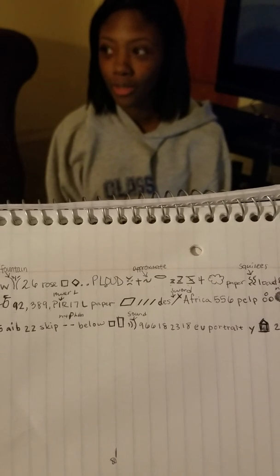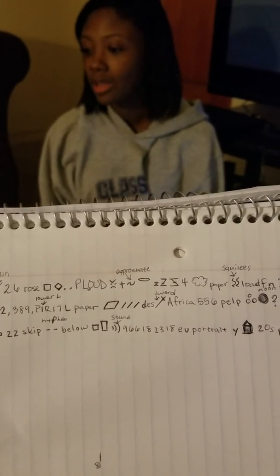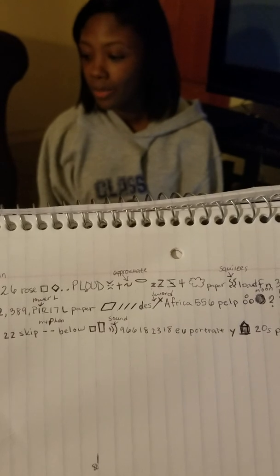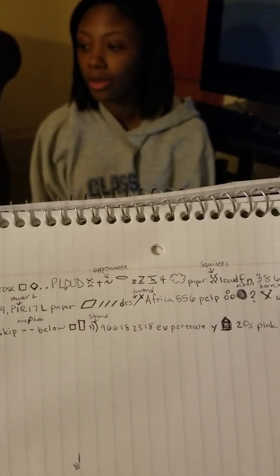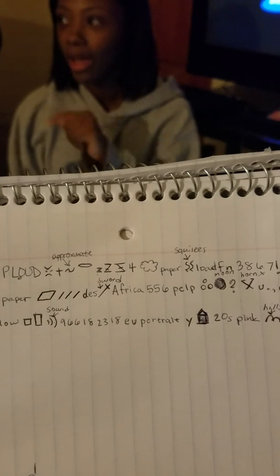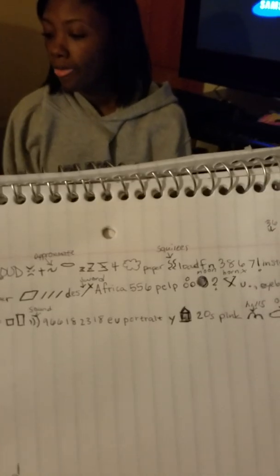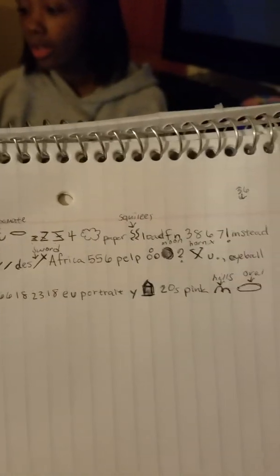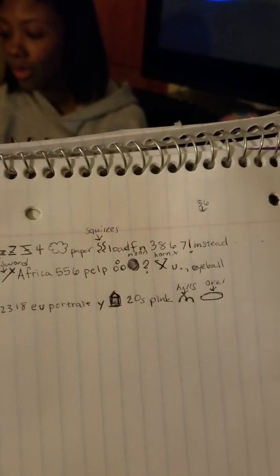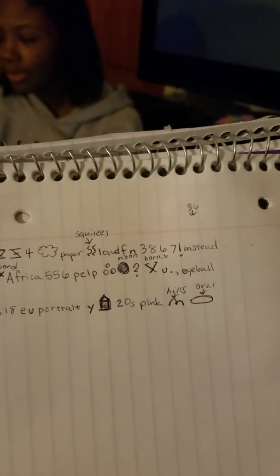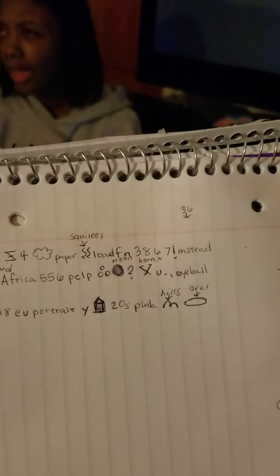P L O U D all in caps, map, a plus, approximate, halo, lowercase b, capital Z, backward Z, four, cloud, paper, squiggly, load, fn.